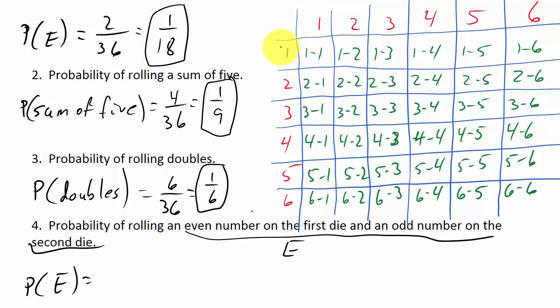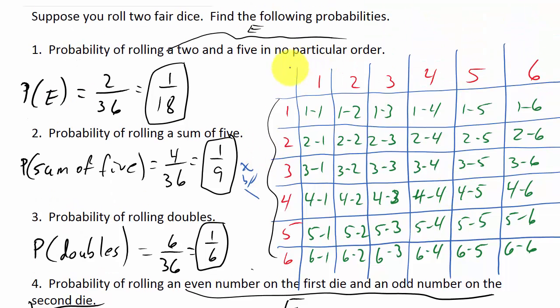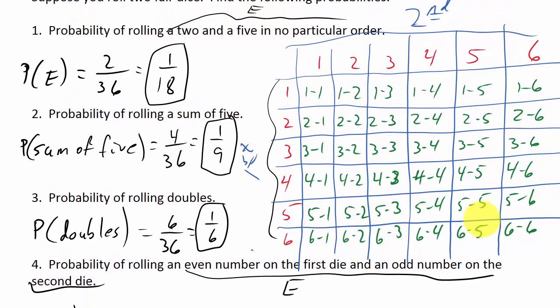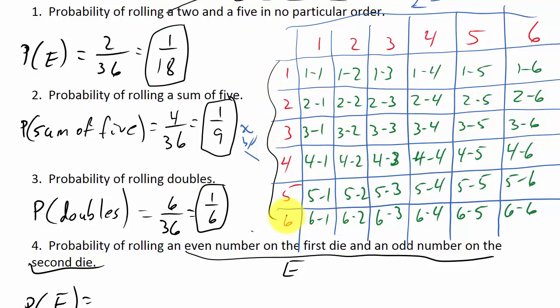Let's label things clearly: the numbers across the top are the first die, and the numbers down the side are the second die. If you roll both at the same time, just designate which is first and which is second.